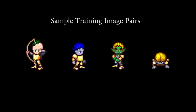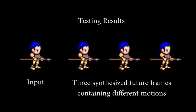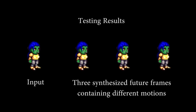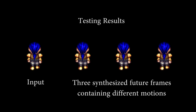Here we show training samples from the sprites dataset and random synthesis results for the specified input image. Notice that although the same input image was used in generating each of these results, each result's motion is slightly different.